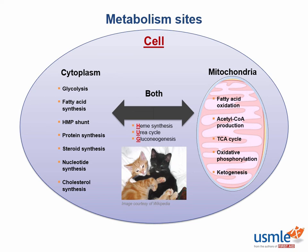The vitamin required for heme synthesis is vitamin B6, or pyridoxine. It's used to convert succinyl-CoA and glycine to aminolevulinic acid, which is the first step in heme synthesis.